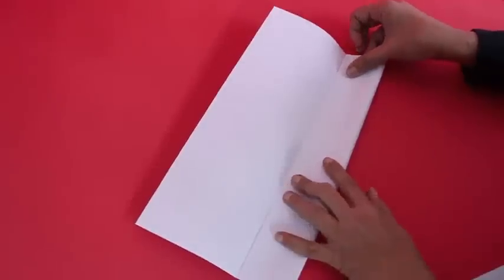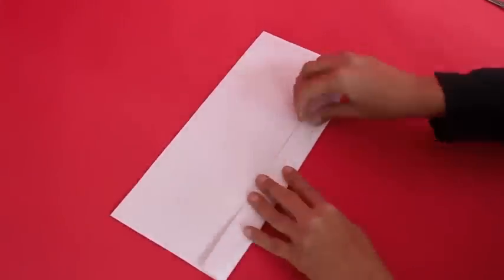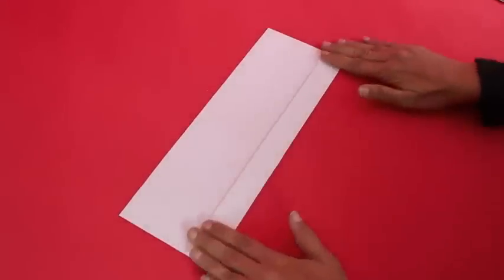First, fold the paper into half, then into a quarter. Open this and then fold the one-eighth crease, and then just keep folding this one-eighth crease once, twice, and three times.